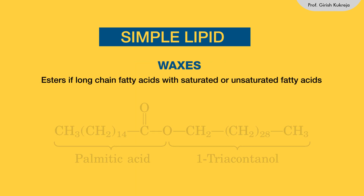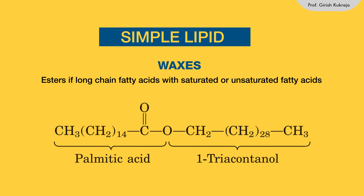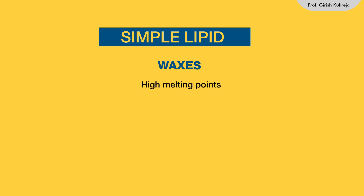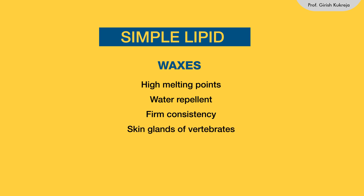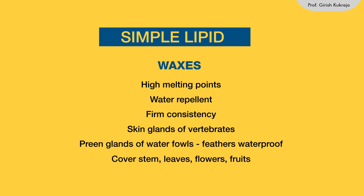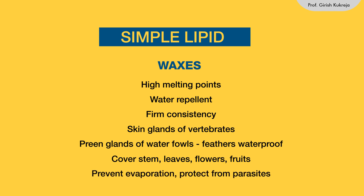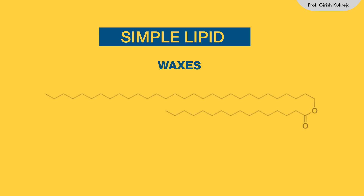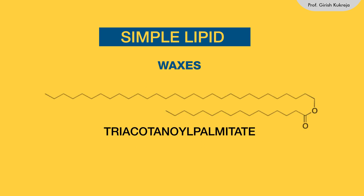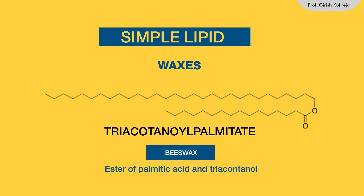Waxes are esters of long-chain saturated or unsaturated fatty acids with long-chain alcohols. They have high melting points, are highly water-repellent, and have firm consistency. They are secreted by some skin glands of vertebrates and by preen glands of waterfowls, making their feathers waterproof. They also cover stems, leaves, and fruits of various plants, preventing evaporation and protecting from parasites. An example is triacontanol palmitate, a common component of beeswax, which is an ester of palmitic acid with triacontanol.